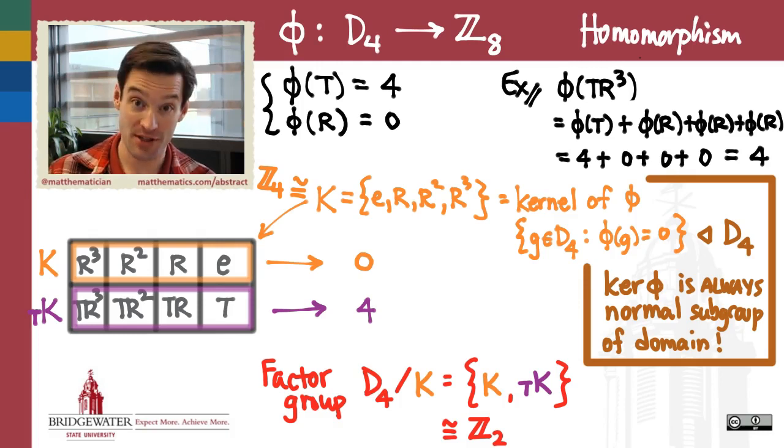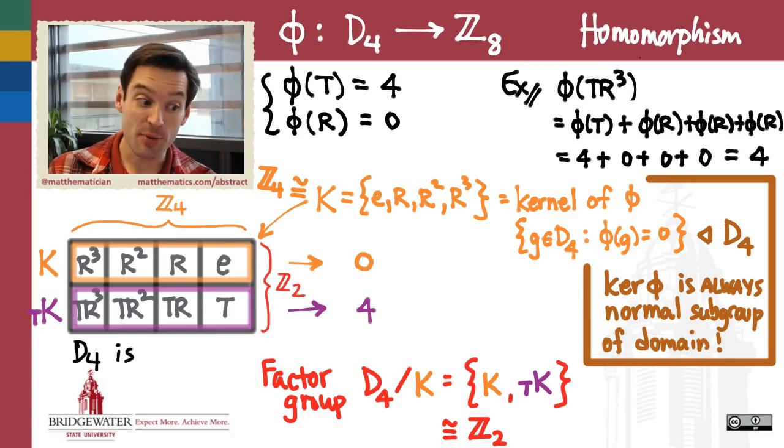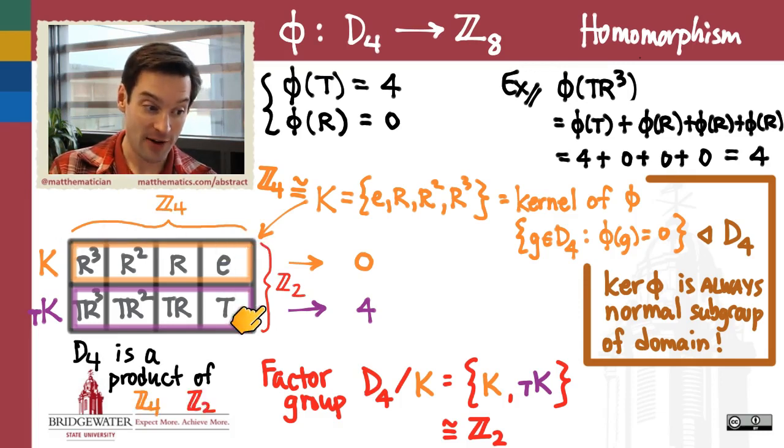What we've accomplished here—we started out just by picking a homomorphism from D₄ to some other group. But after we've done all this work, we've just realized D₄ as a product of the subgroup ℤ₄ on the one hand and the factor group ℤ₂ on the other hand. We've realized D₄ in a product construction with a subgroup of D₄, which happens to be normal, and its cosets, the factor group, that happen to be isomorphic to ℤ mod 2.